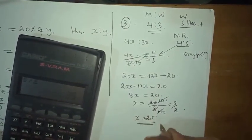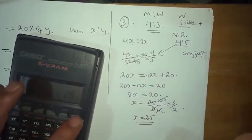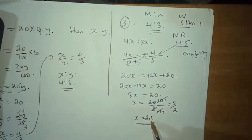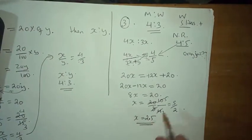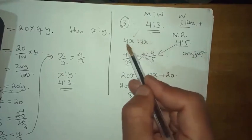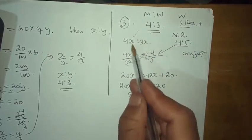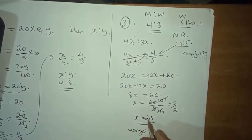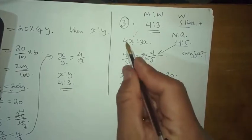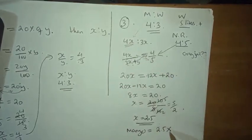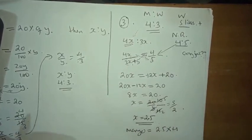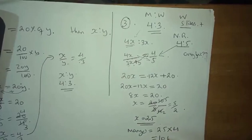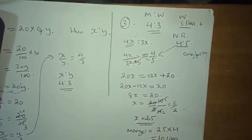So x equals 2.5. The quantity of mango juice is 4x, that is 4 into 2.5, which equals 10 liters. The answer is 10 liters.